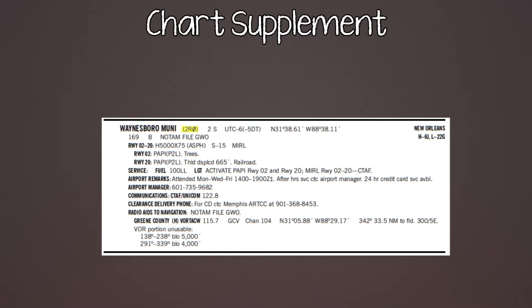Now let's look at the chart supplement for Waynesboro Airport. It shows the airport name, identifier, location (two miles south of the city), UTC conversion, latitude and longitude, and that it's on the New Orleans sectional. Elevation is 169 feet and it has a rotating beacon. Runway 2/20 is a hard surface asphalt runway, 5,000 by 75 feet. S15 means it supports single-wheeled landing gear aircraft up to 15,000 pounds. There are medium intensity runway lights, PAPIs on both runways, and runway 20 is displaced due to a railroad. Fuel available is 100LL.